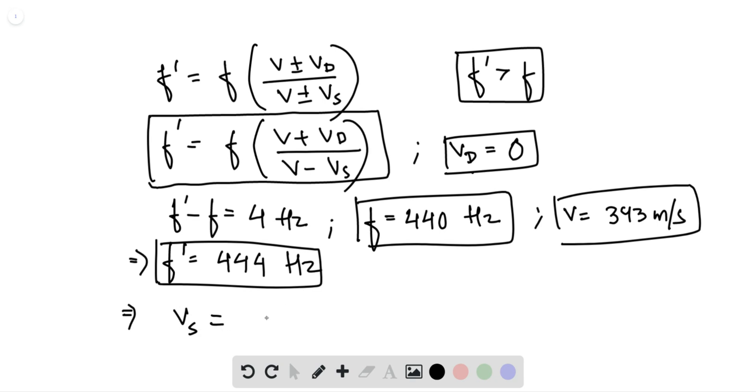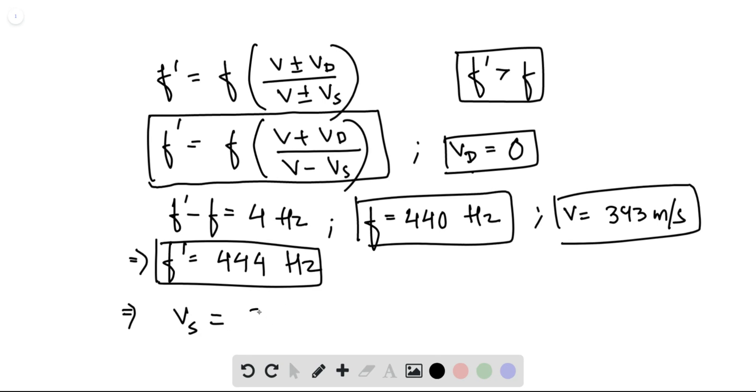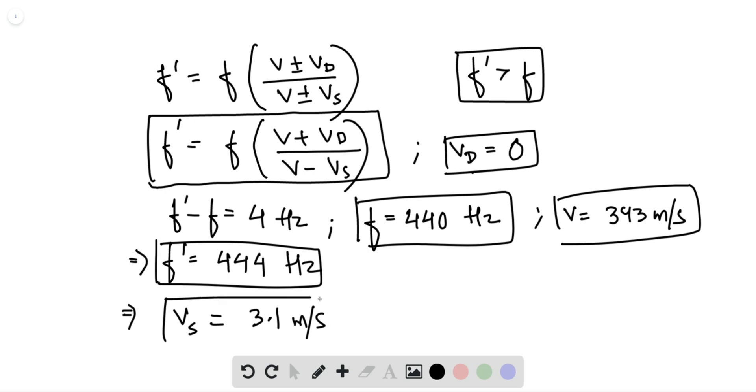So v_s then comes out to be, after solving, 3.1 meters per second. So this is the velocity of the source.